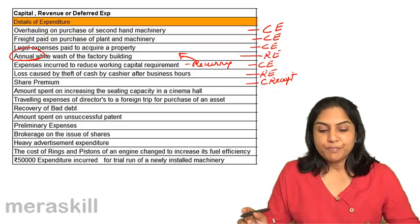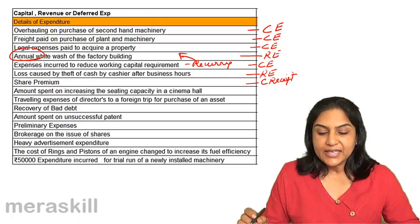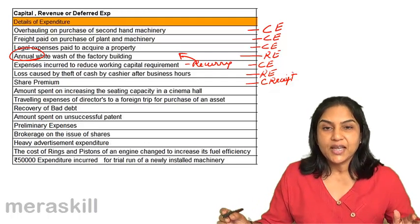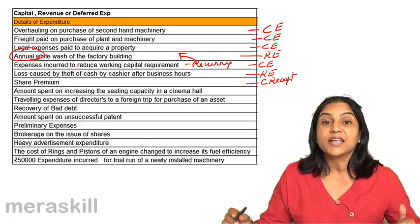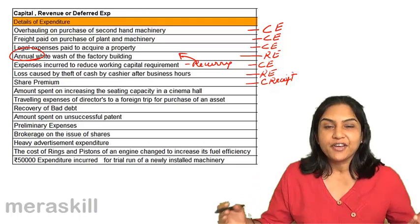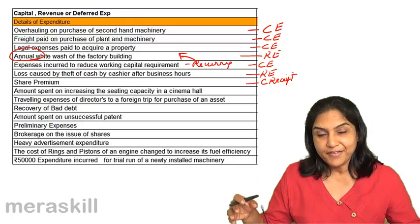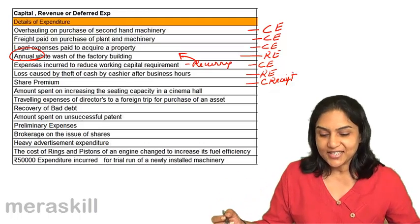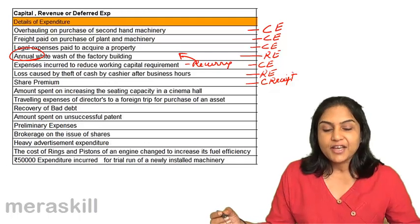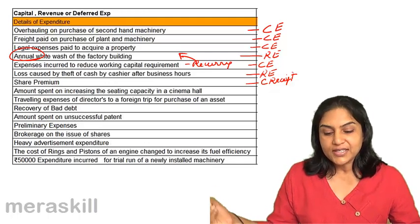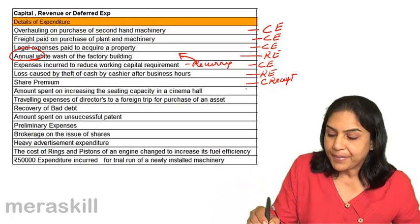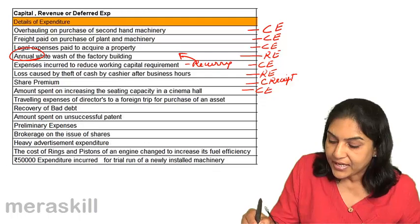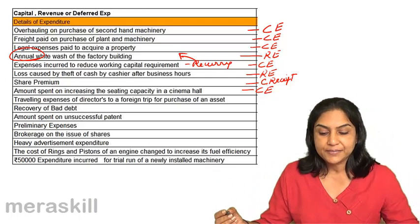Amount spent on increasing the seating capacity in a cinema hall. If the seating capacity has increased, the revenue-generating capacity has increased. Therefore, the amount spent on increasing seating capacity should be a capital expenditure and should be capitalized.